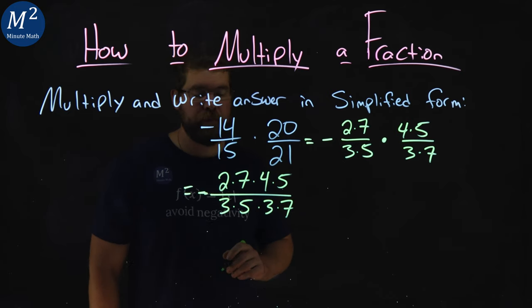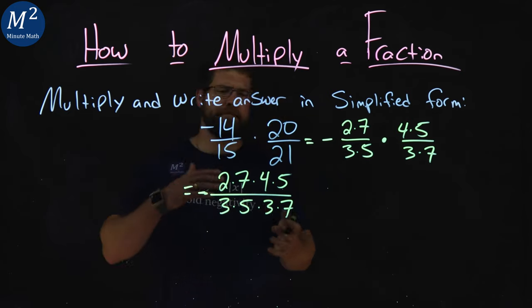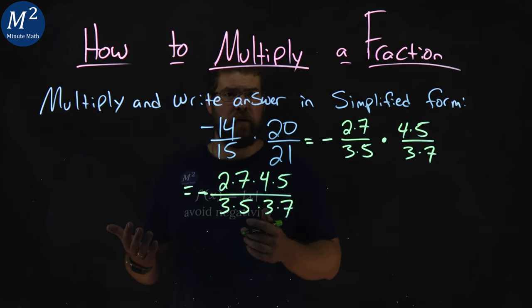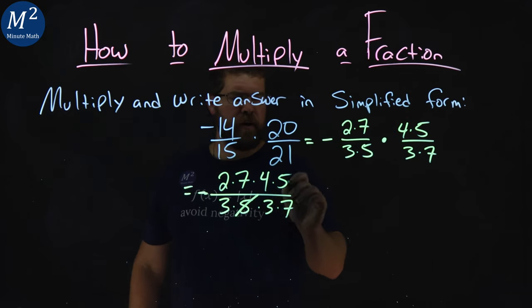Now we want to see which values can cancel out. I have a 5 here and a 5 here. Got it. 7 in the denominator, 7 in the numerator. Got it.